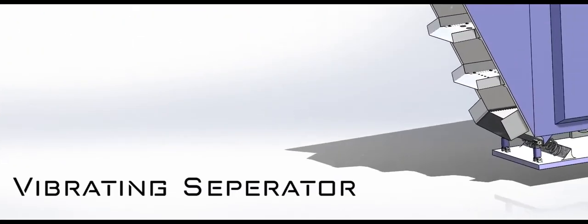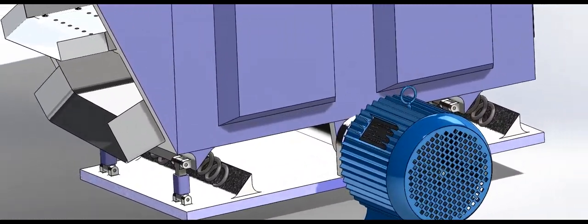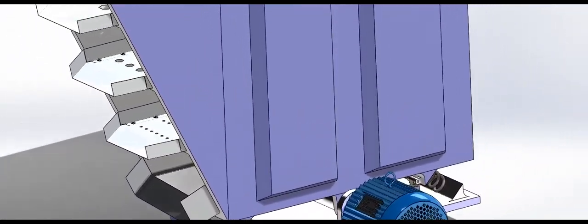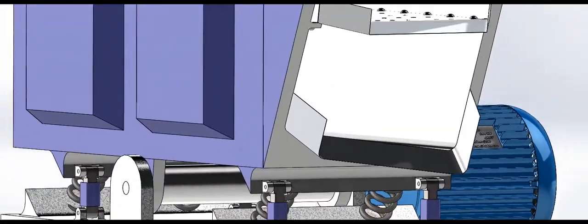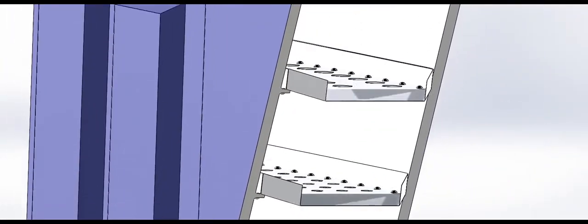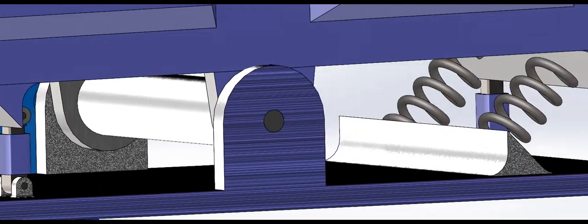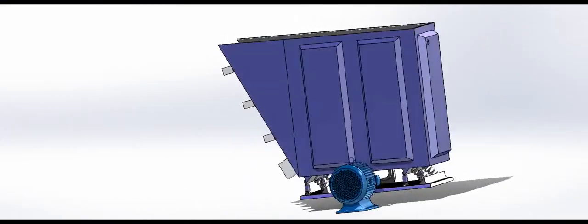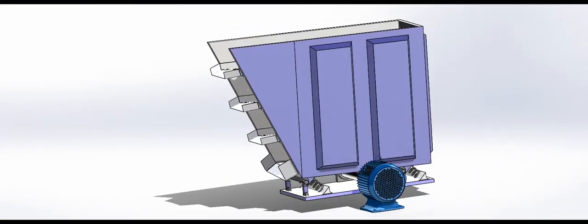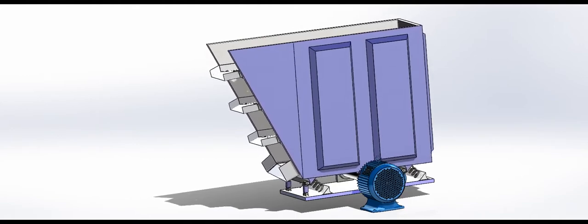It uses vibration to separate objects. This is done by having an offset axle spin while attached to springs, which converts the vertical motion into a primary horizontal force applied on the trough, causing the objects to move forward on the grates. The grates have holes in decreasing size, allowing smaller particulates to be separated.